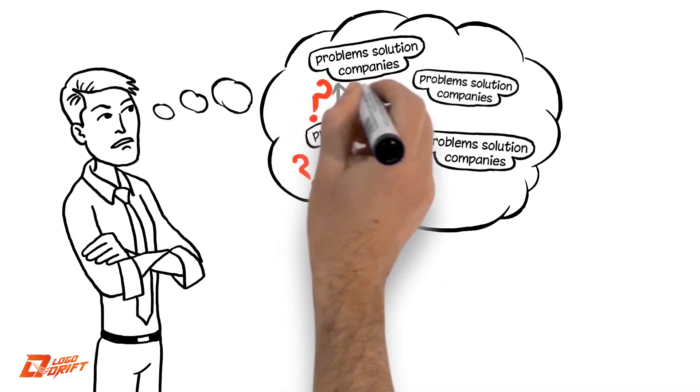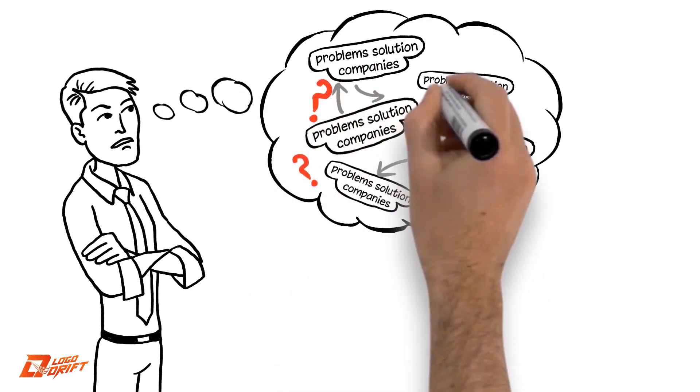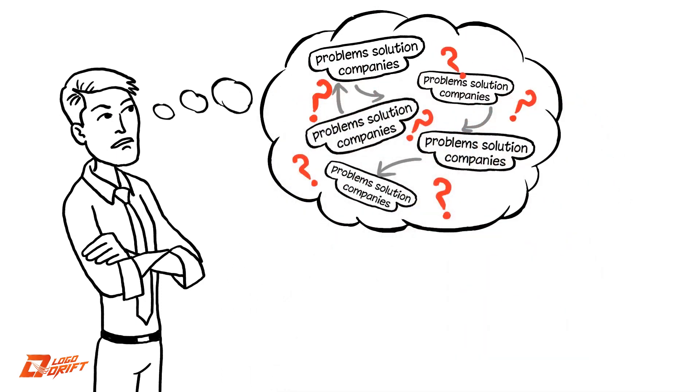Bob is continuously being frustrated by following the traditional route of approaching various companies for a solution that can take care of his problems.